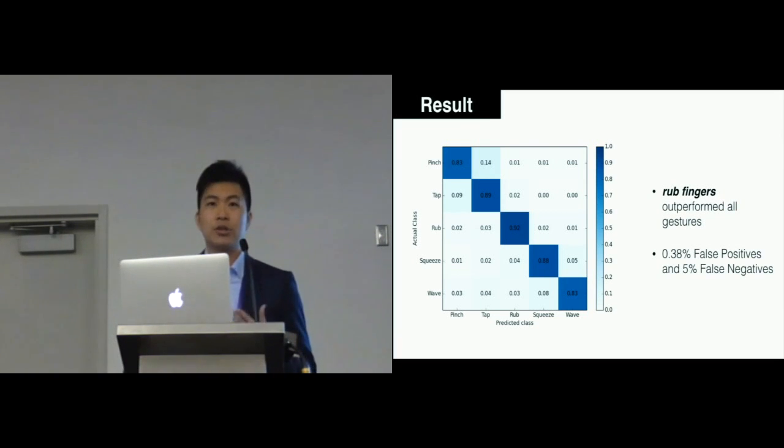By introducing rub finger for three times as an activation gesture, we achieved 0.38 false-positive rate and 5% false-negative rate.